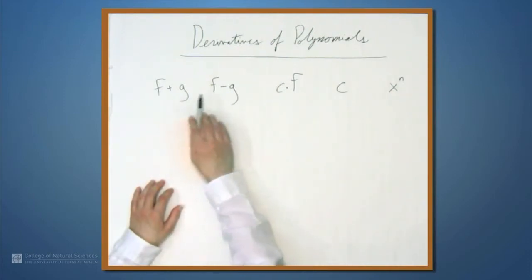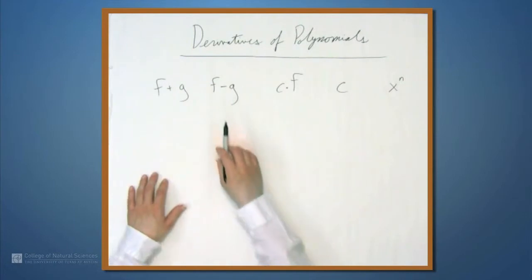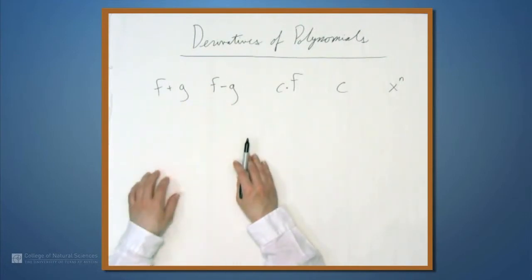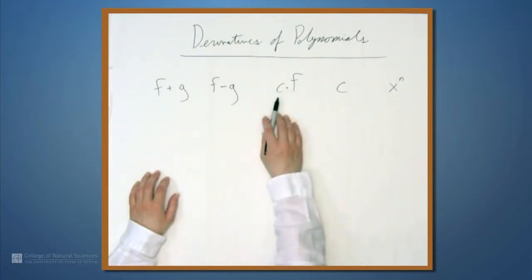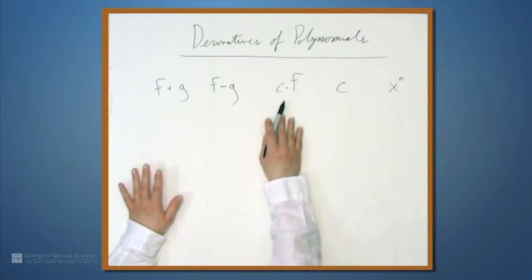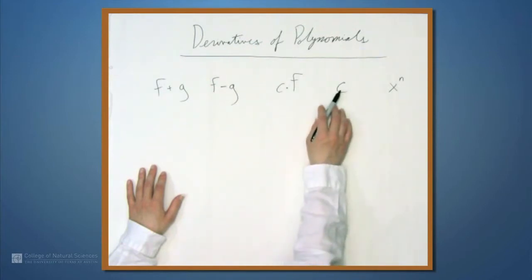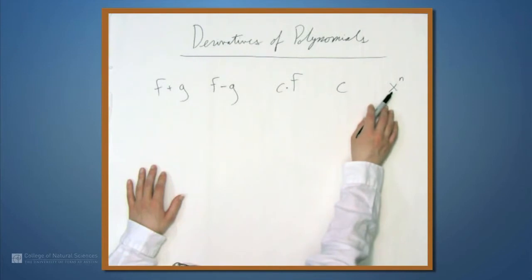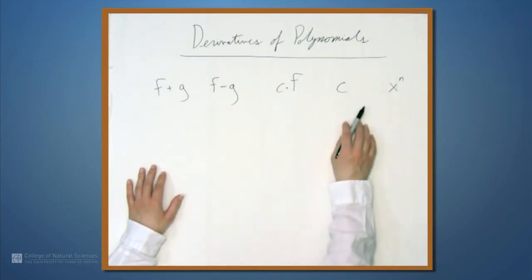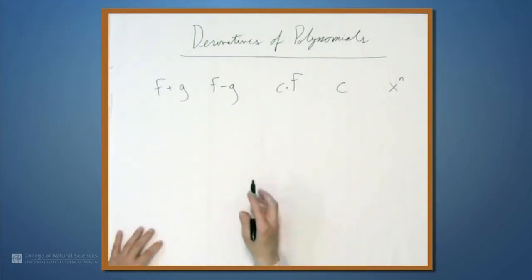The derivatives of f plus g and f minus g are just what you'd want them to be. You'd differentiate each part separately. The derivative of a product of a constant and a function is also just what you would want it to be - it's the constant times the derivative of the function. The derivative of a constant is 0, and this one is the only interesting one here, the derivative of x to the n, which is the power rule and we'll talk about that in a moment.